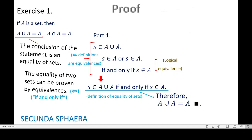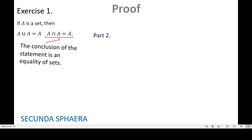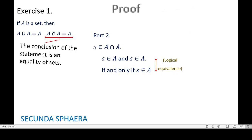That is all for the first part of the proof. Now for part 2. Part 2 is again an equality of sets, so we start with S in the intersection of A and A. Using the definition of intersection, S is in A and S is in A. Now we use a logical equivalence of the connector AND: if AND is connecting the same clause, we can eliminate one of them. So if and only if S is in A.